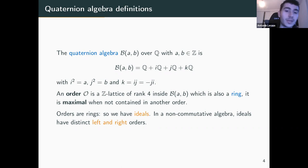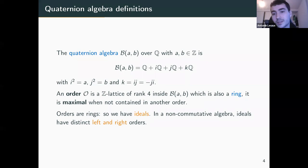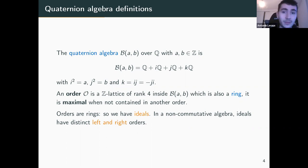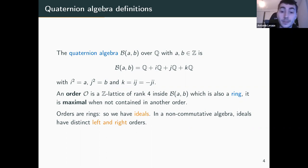This means that we can also have ideals of those orders. And in this non-commutative setting, ideals have distinct left and right orders. And this means that we are going to be able to build a kind of graph structure on top of the quaternion algebra by considering nodes as orders and then edges as ideals.